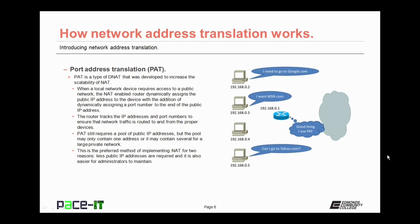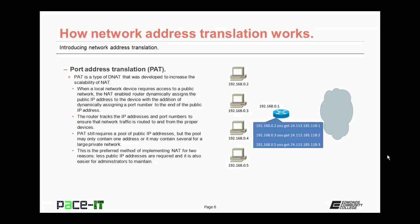Thankfully, there is a solution to this, and that solution is called port address translation, or in Cisco terms, NAT with PAT. PAT is a type of dynamic NAT that was developed to increase the scalability of network address translation. When a local network device requires access to a public network, the NAT-enabled router dynamically assigns the public IP address to the device, with the addition of dynamically assigning a port number to the end of the public IP address. The router tracks the IP addresses and port numbers to ensure that network traffic is routed to and from the proper devices.